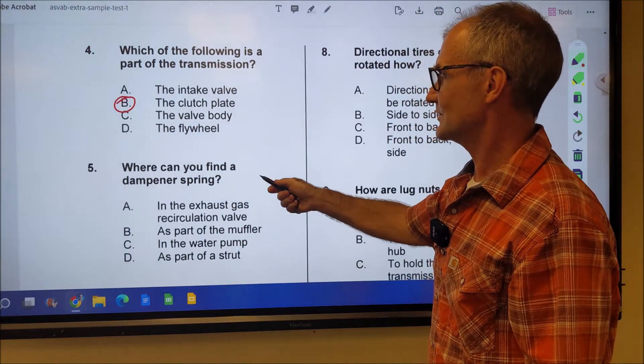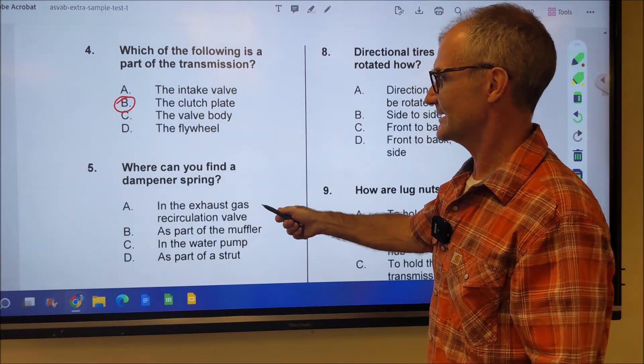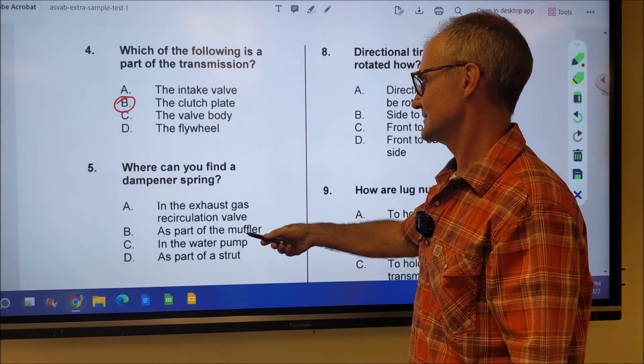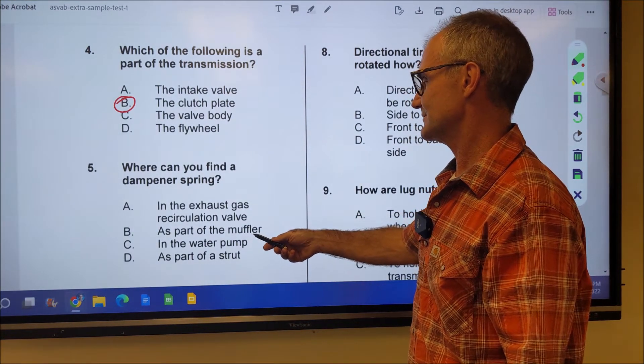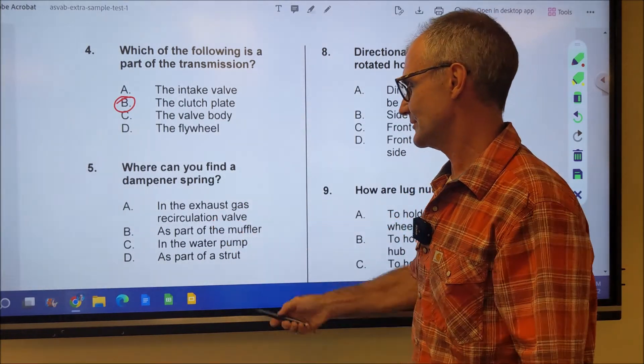Number five, where can you find a dampener spring? Same thing. If you don't know what that is, you go through the answers and see if they make sense. It would have nothing to do with the exhaust. Part of the muffler, that doesn't make sense either. And the water pump, why would you want to dampen a water pump?